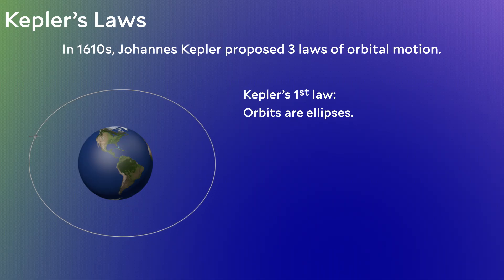The idea was that circles are perfect and anything in the sky was also perfect, so planets orbiting the Sun must orbit on perfect circles. The problem is that if you assume planets orbit in perfect circles, it's impossible to correctly predict their positions. Kepler made what seems like a slight adjustment and was all of a sudden able to predict the positions of planets in the sky with amazing accuracy.